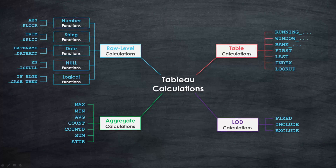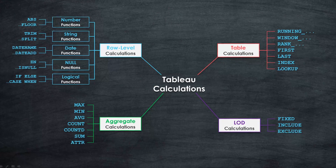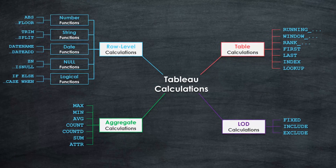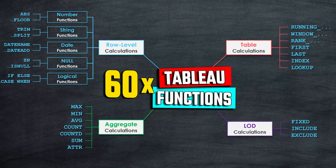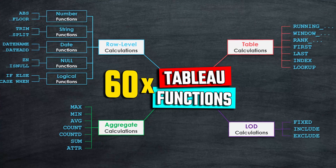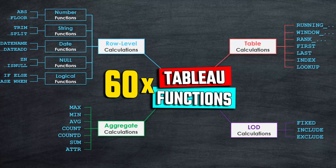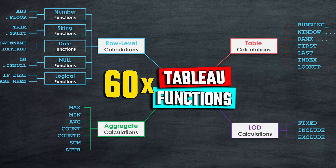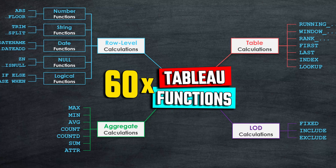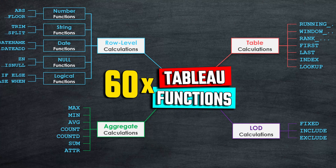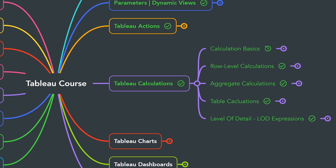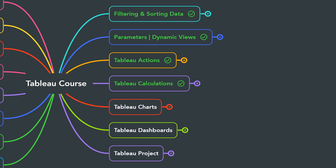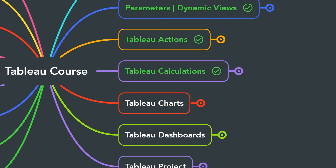That's all for the Difference function in Tableau. We've now covered all four types of table calculations, and with that you've learned around 60 different functions in Tableau — giving you enough tools to create new fields in your data source and to manipulate your data. This completes the Tableau Calculations section.